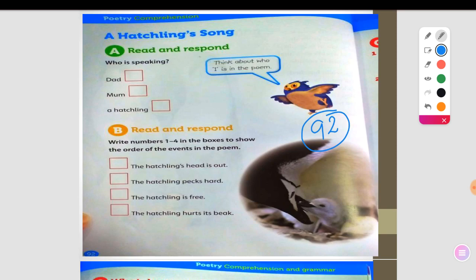So let's start answering the following exercise. So we have here exercise A. Here, first the title: A Hatchling's Song. Right here, we are going to tick the box and check who is speaking, who's telling this song, who's singing the song.